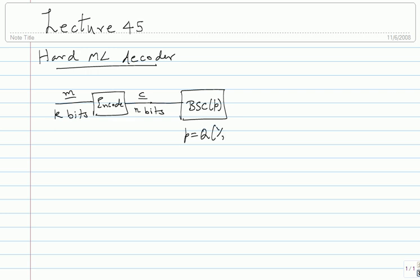This p you can compute from the AWGN model as Q of 1 over sigma. You get a vector b, which is n bits. The distribution for b requires conditioning on c — conditioned on c, b will be a binomial around c, so vectors around c get a certain weight. Now b can be any one of the 2^n possibilities. We also model this process by an error vector e of n bits, where each component e_i is 1 with probability p and 0 with probability 1 minus p.